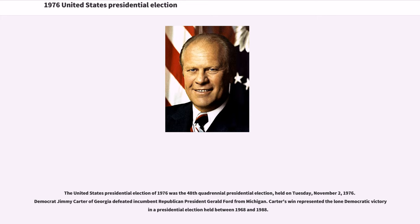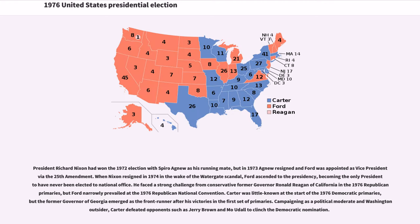Carter's win represented the lone Democratic victory in a presidential election held between 1968 and 1988. President Richard Nixon had won the 1972 election with Spiro Agnew as his running mate, but in 1973 Agnew resigned and Ford was appointed as vice president via the 25th Amendment. When Nixon resigned in 1974 in the wake of the Watergate scandal, Ford ascended to the presidency, becoming the only president to have never been elected to national office.